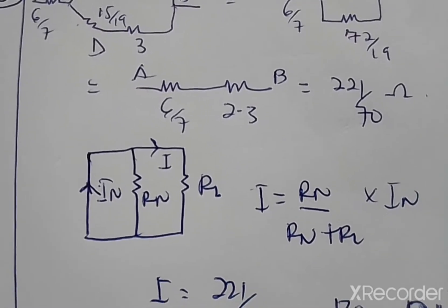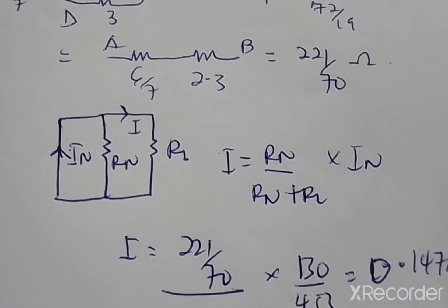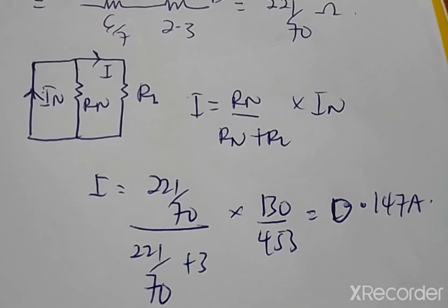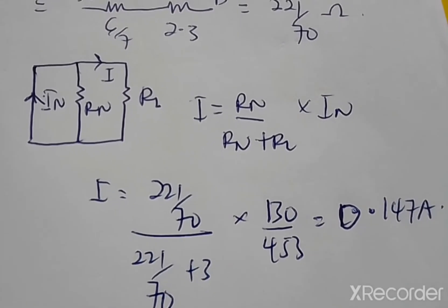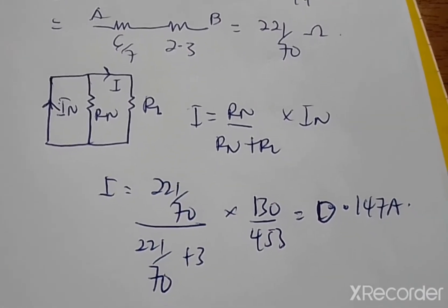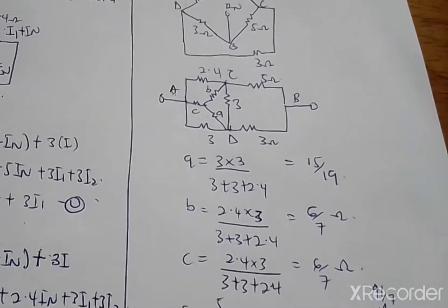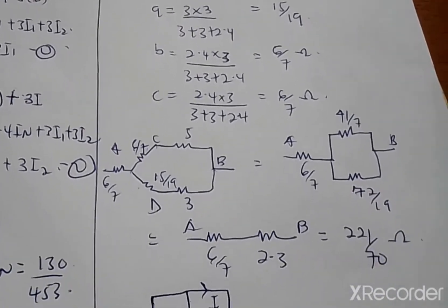And you find your current I. You realize that your I is 0.147 amperes. This is the end of the video. This is the simple way you can go about the bridge circuit. Thank you for watching. Kindly subscribe and share.